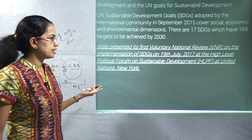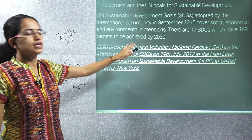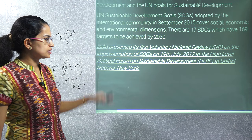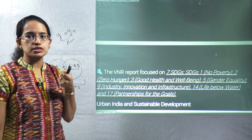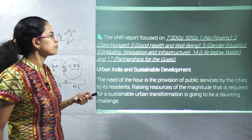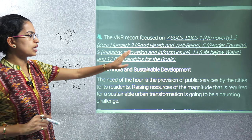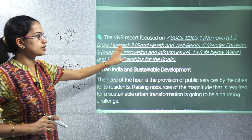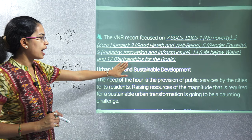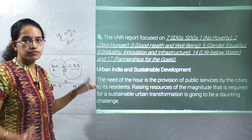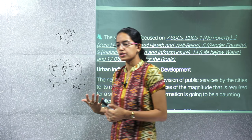India's development for sustainable development: India presented the first Voluntary National Review on the implementation of Sustainable Development Goals. Under this report, India focused on seven sustainable development goals: no poverty, zero hunger, good health, gender equality, industry and innovation, life below water, and partnerships for goals. These seven become very important and there could be a direct objective question on which SDG was not part of India's Voluntary National Review.